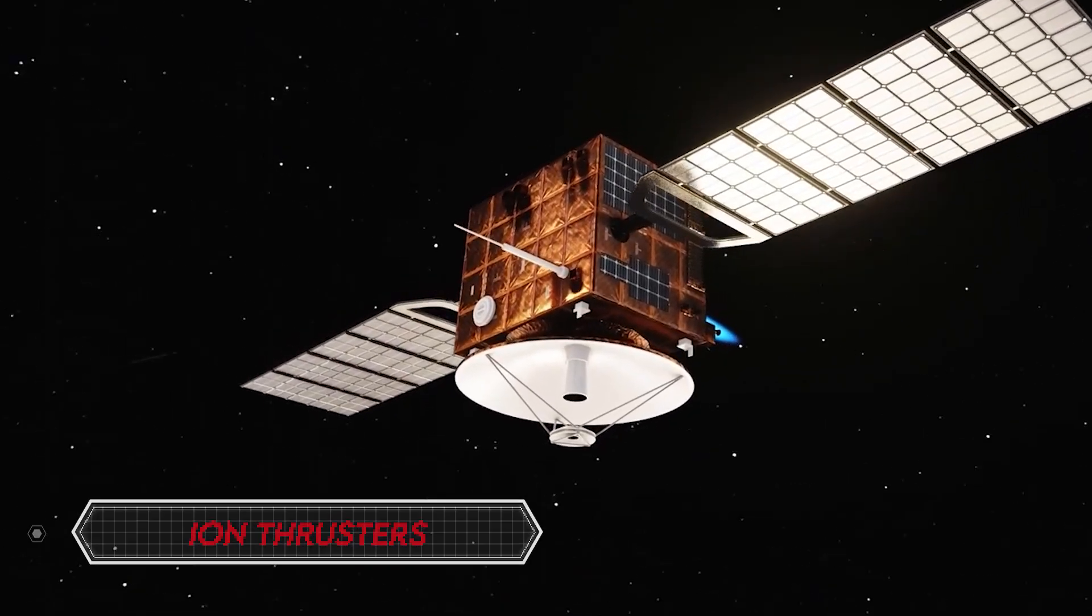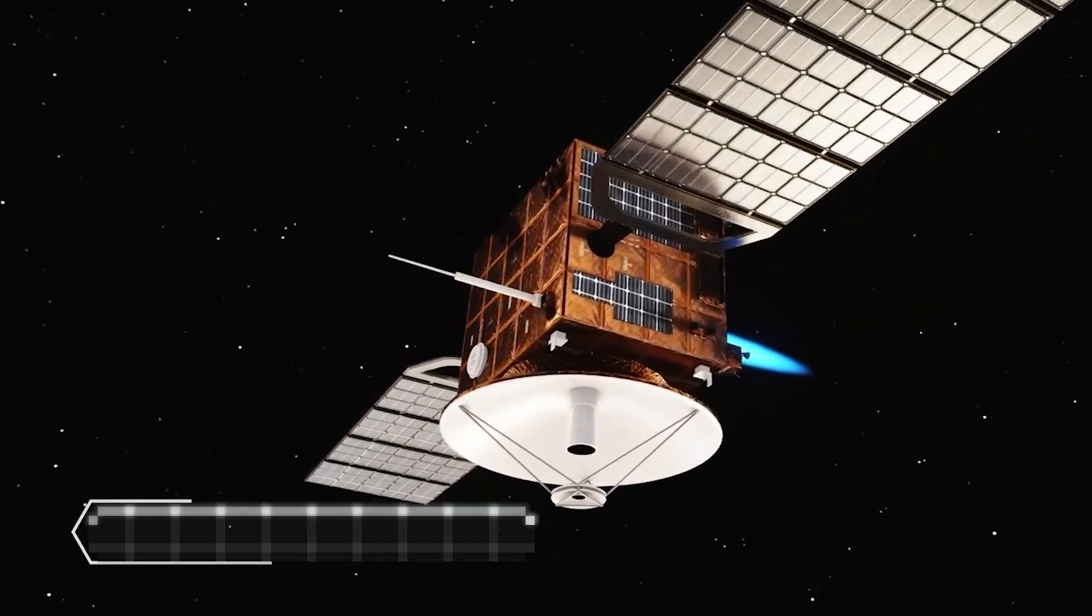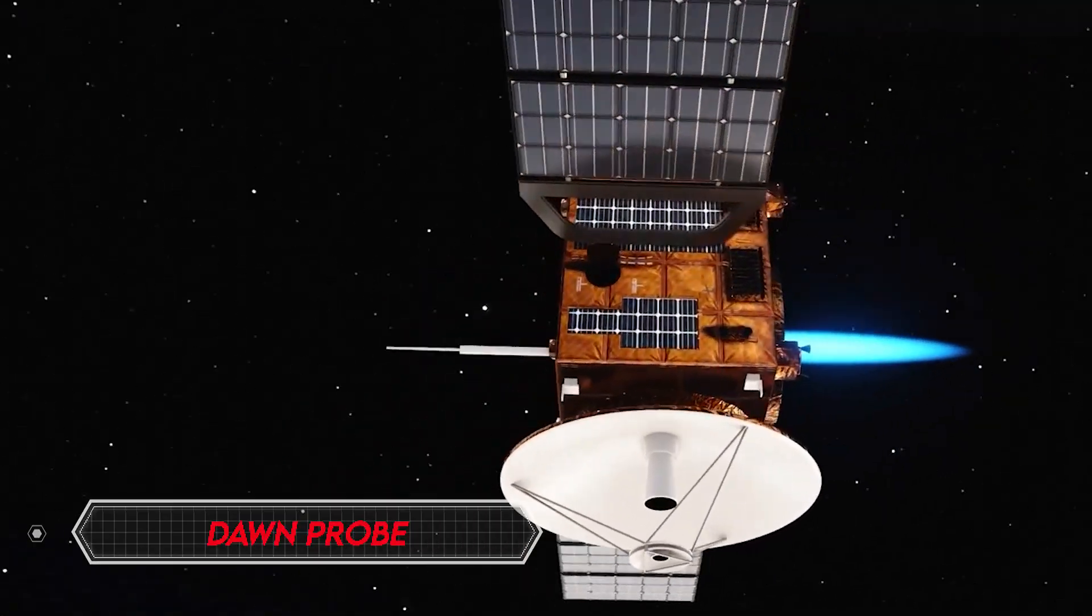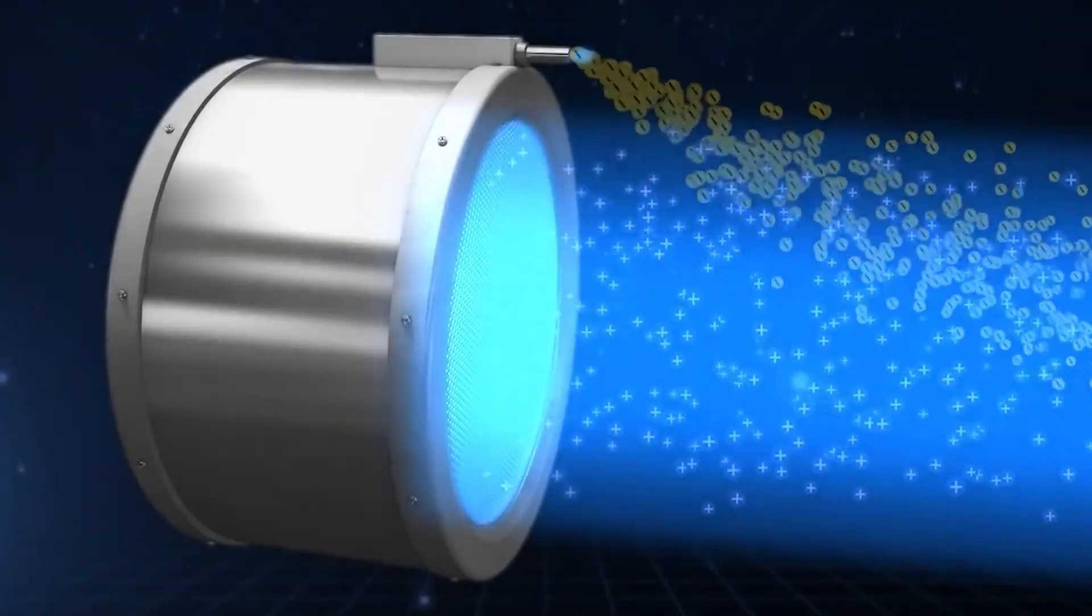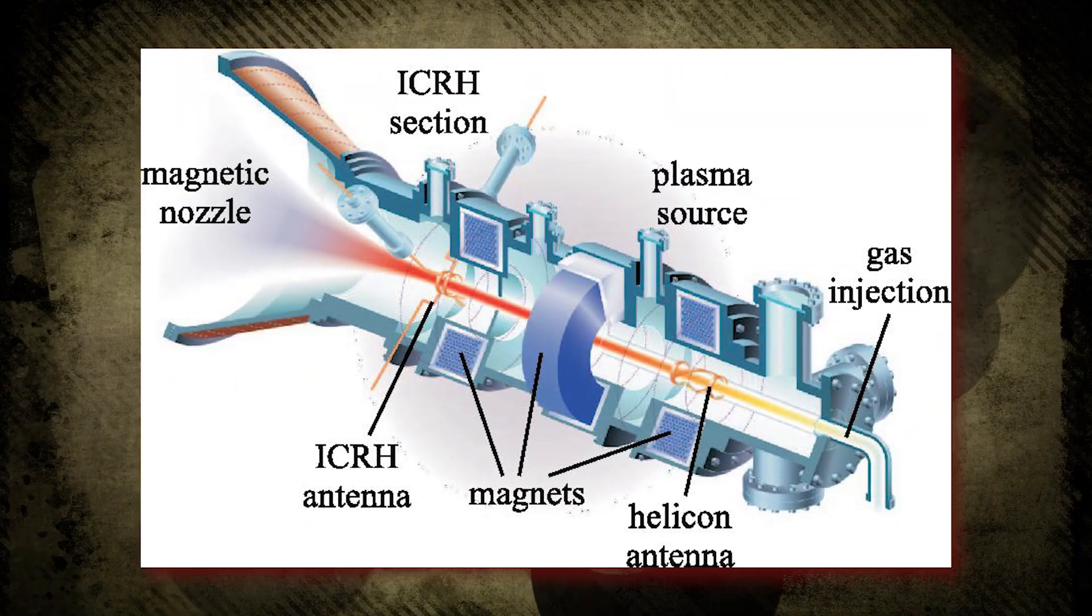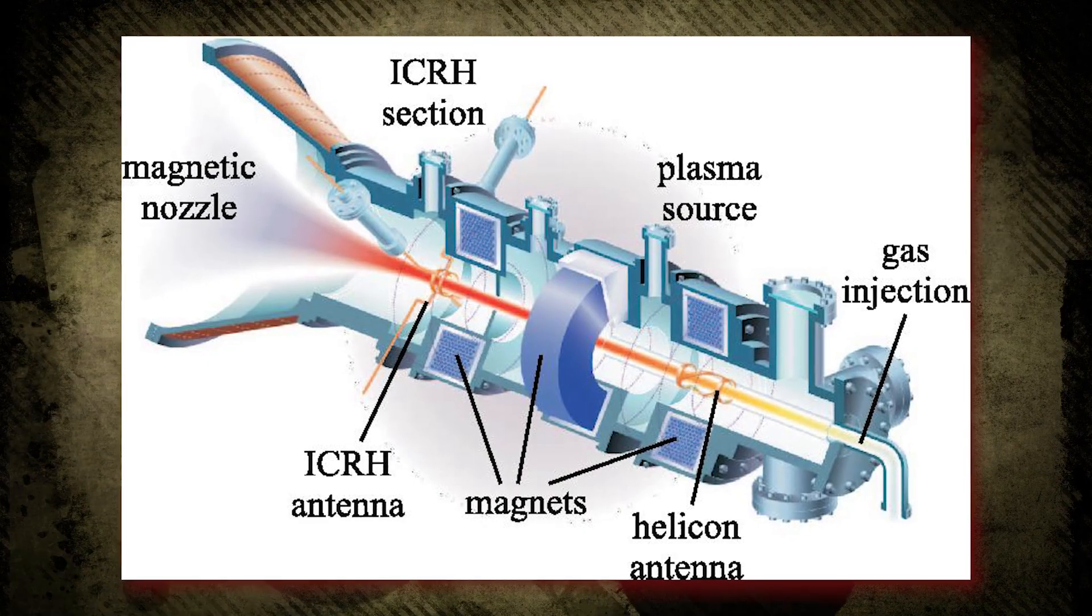Understanding the distinction between ion thrusters, like those on NASA's Dawn probe, and plasma engines is crucial. Ion thrusters expel positive ions of gases like xenon, while plasma thrusters, with greater flexibility, use various gases, making them versatile.